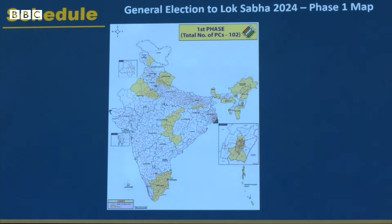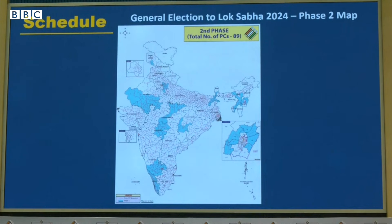Phase 1 will cover the North East, Tamil Nadu, Rajasthan, Chhattisgarh, Madhya Pradesh, Uttarakhand, and Jammu Kashmir's one parliamentary constituency.